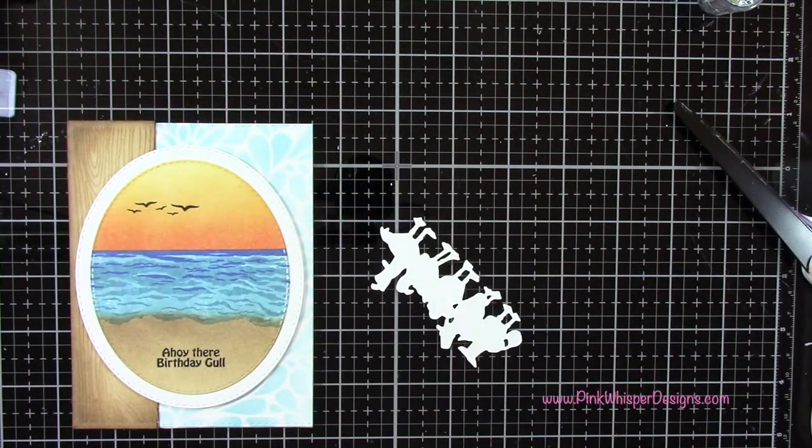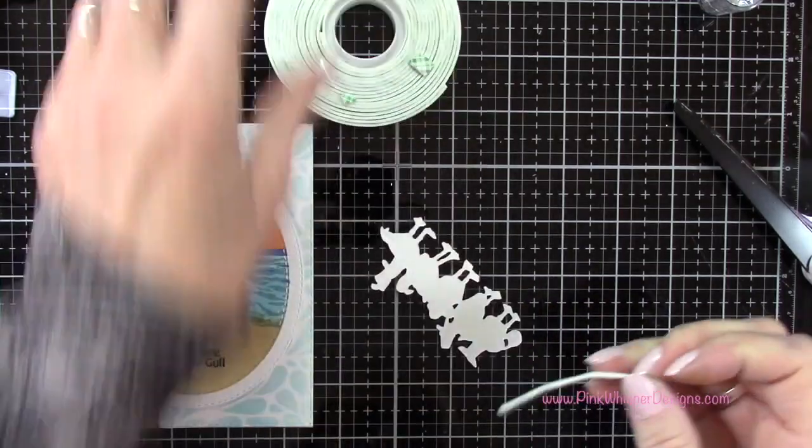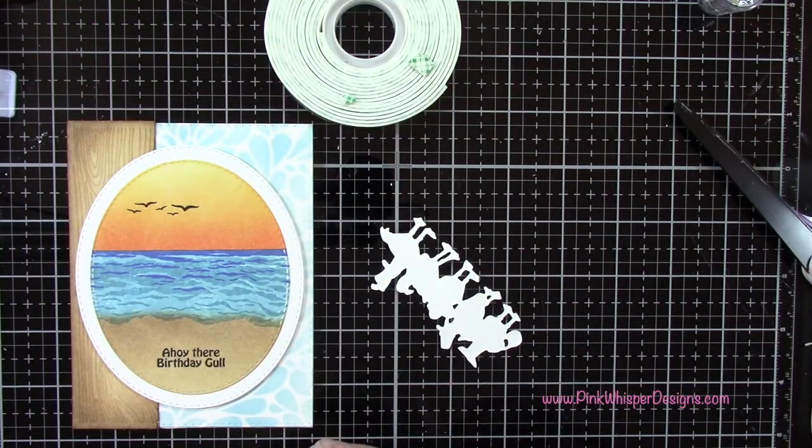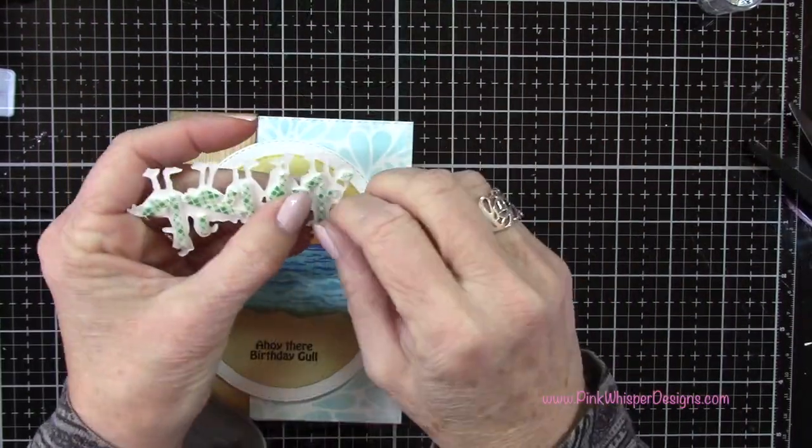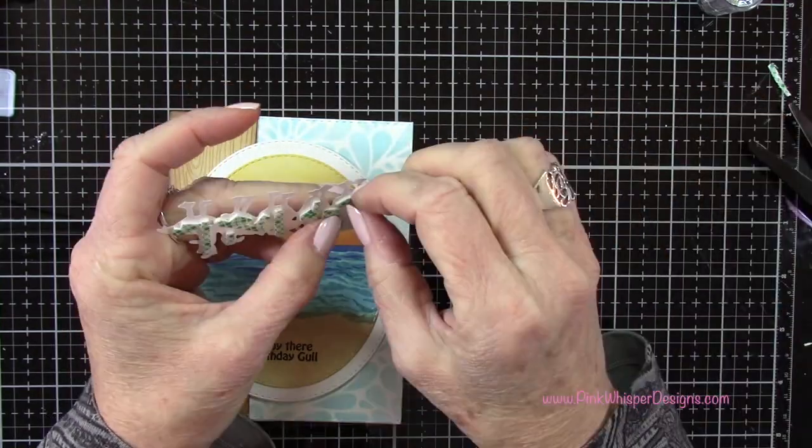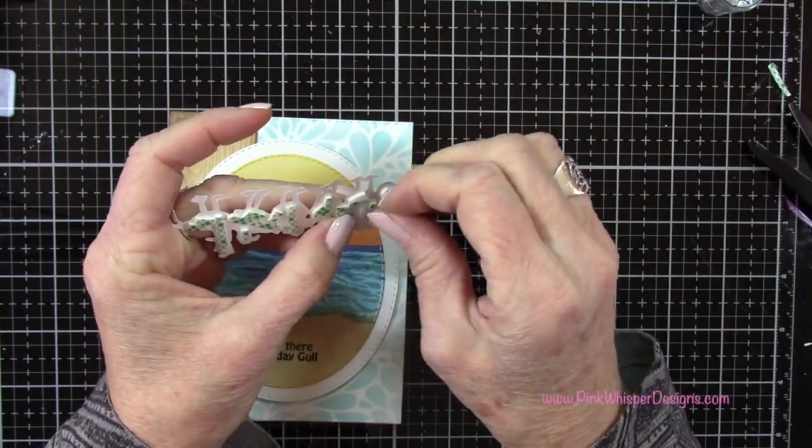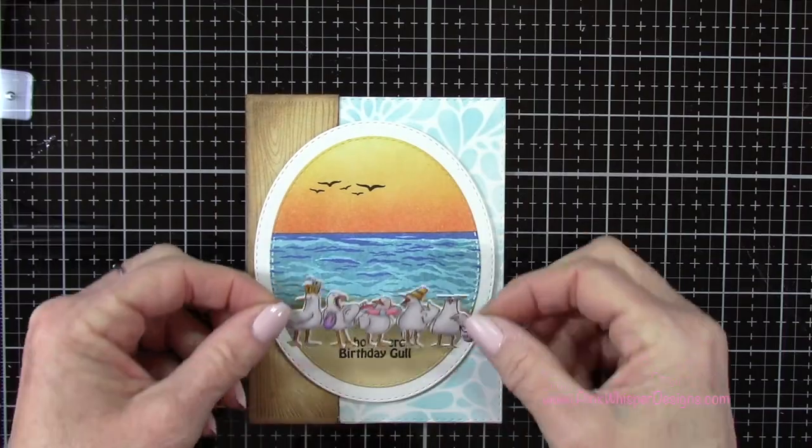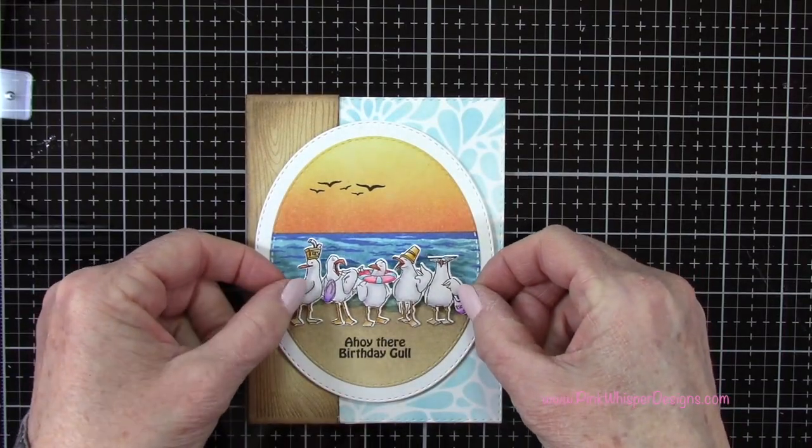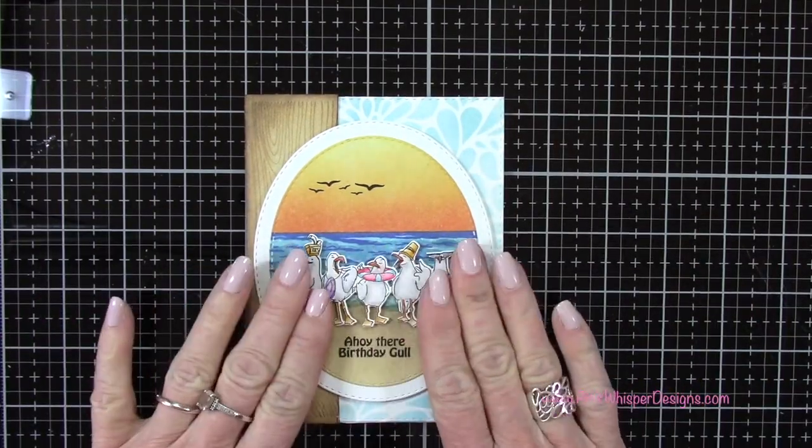Now we can add the little seagulls. I'm using the scotch foam mounting tape to attach these. Again you want to use plenty of foam here just to make sure that they go through the mail really well. That'll also add a little dimension here.